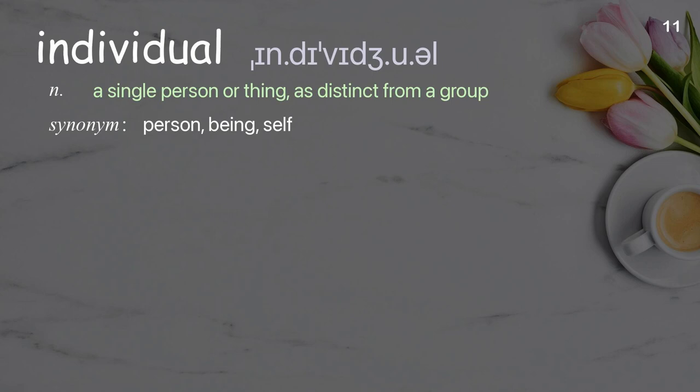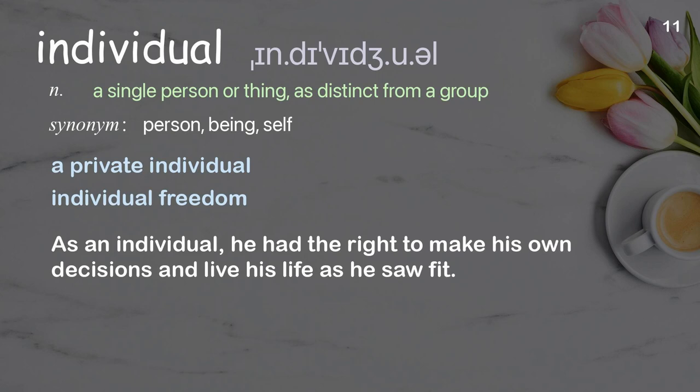Individual: A single person or thing, as distinct from a group. Examples: A private individual, Individual freedom. As an individual, he had the right to make his own decisions and live his life as he saw fit.